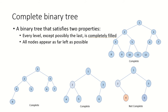Next we have the complete binary tree. A complete binary tree satisfies two properties. First, every level except the last level must be completely filled. Second, the last level may or may not be completely filled, but all nodes must appear as far left as possible.